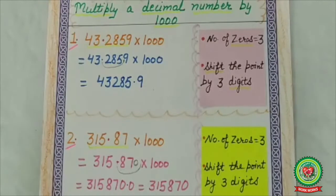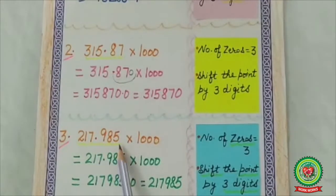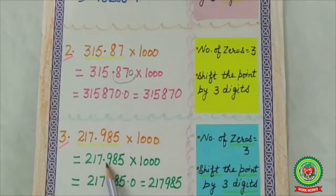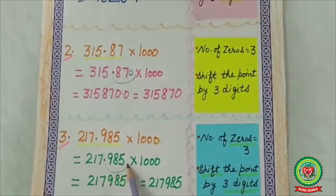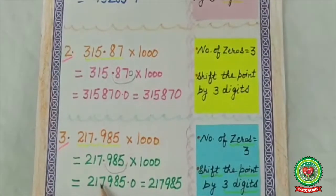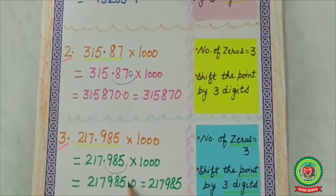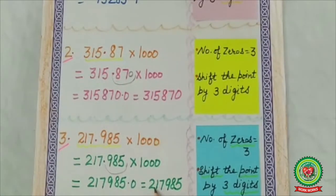One more example: 217.985 multiplied by 1000. Number of zeros is 3, so shift the point by 3 digits — 1, 2, 3. After the point there are exactly 3 digits. Now the point comes after 5. The answer is 217985.0, which is also equal to 217985.